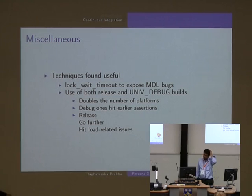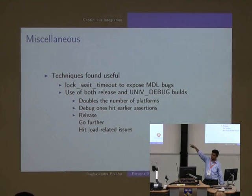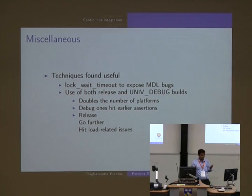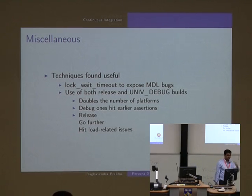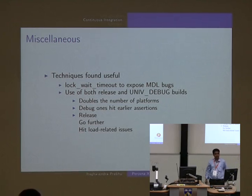In the debug builds, it hits assertions earlier so you know where the problem lies. Otherwise what happens is it crashes several call chains away from where the actual problem is. Sometimes you get double free, malloc corruption, or heap corruption - and most of the time it's nothing to do with where it has crashed; the corruption is introduced somewhere earlier.